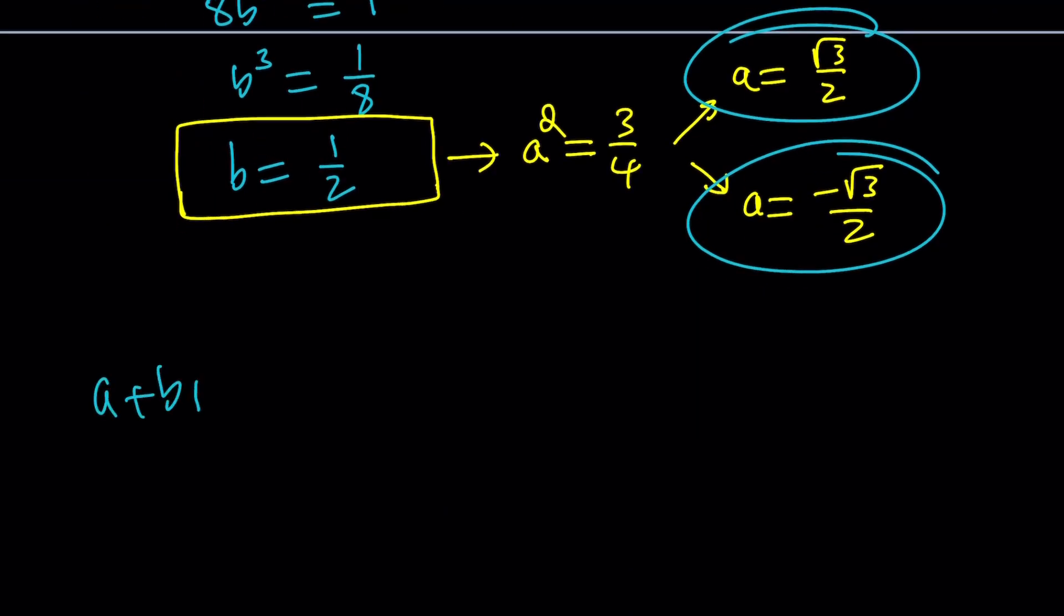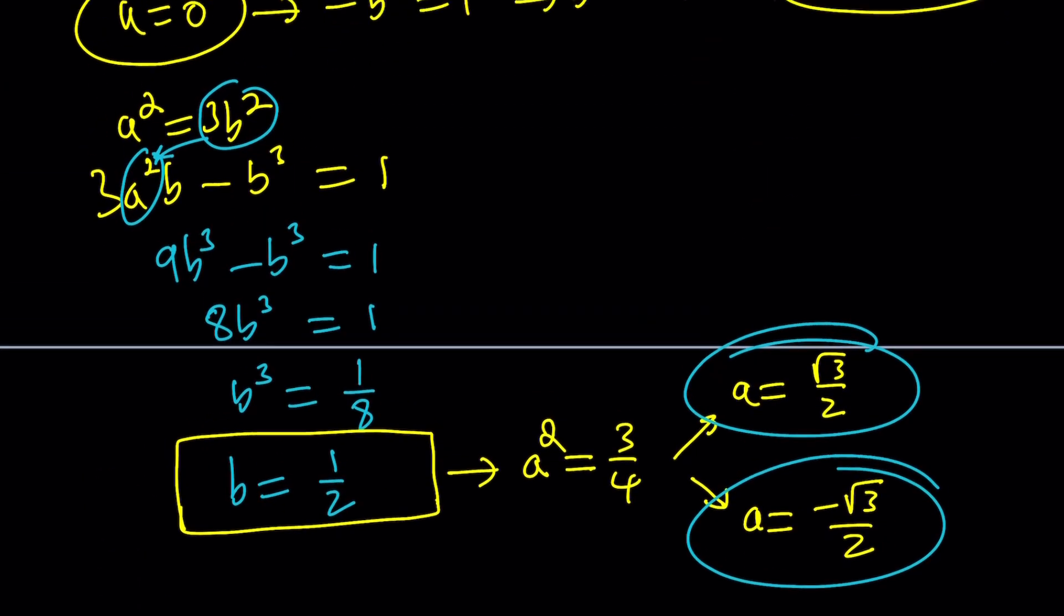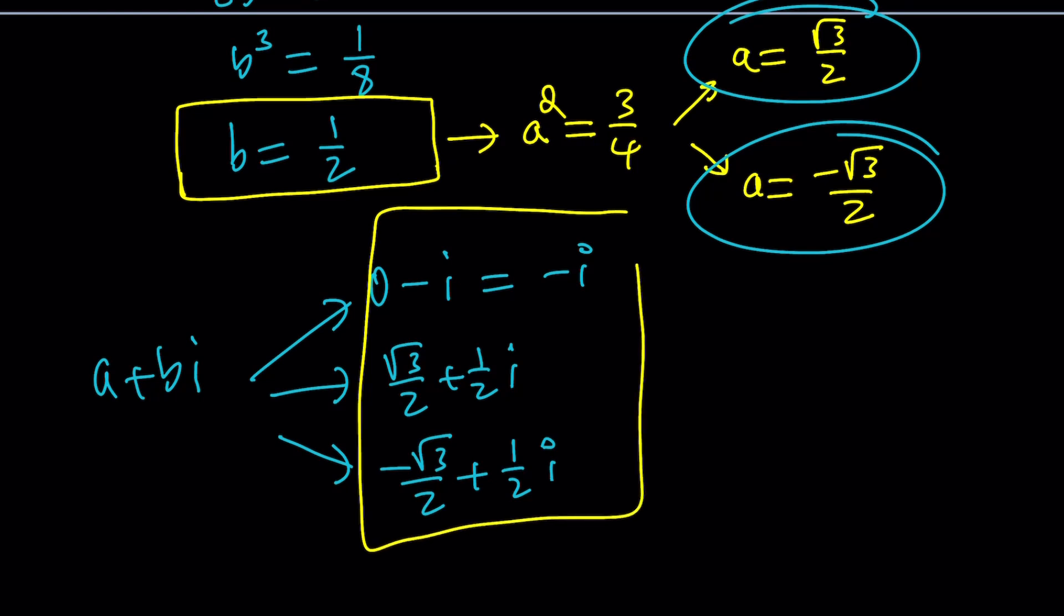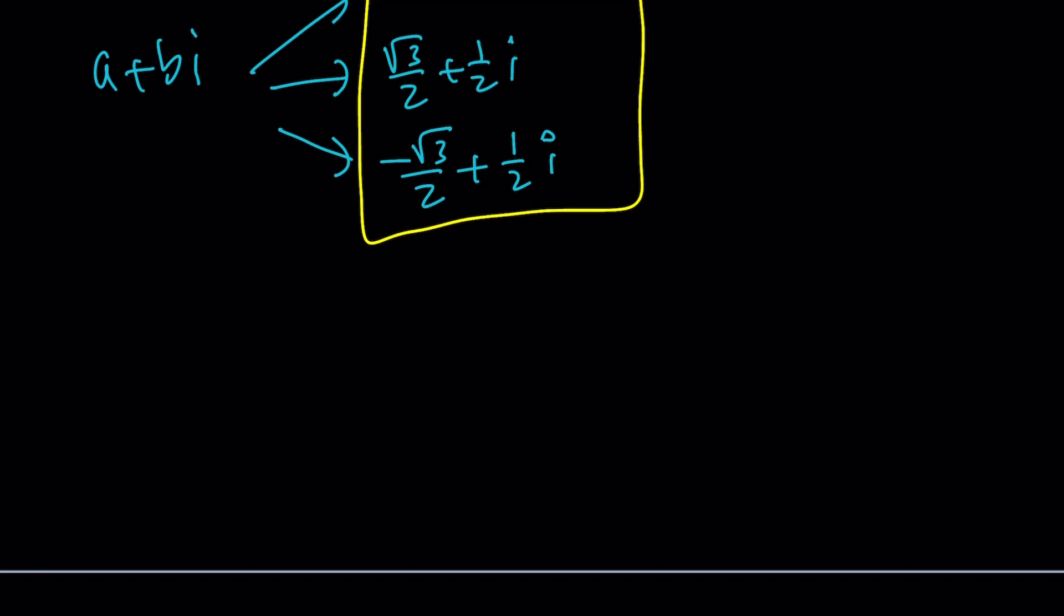So those are the pairs we got. And since we're looking for A plus B I, A plus B I can be zero minus I, which is negative I. It can be root three over two plus one half I, or it can be negative root three over two plus one half I. Awesome. So there are three solutions. And that kind of makes sense, doesn't it? Because we had a cubic equation at the very beginning. So obviously this would give us a cubic equation, but there are two variables. But guess what? We can solve for two variables in a single equation.